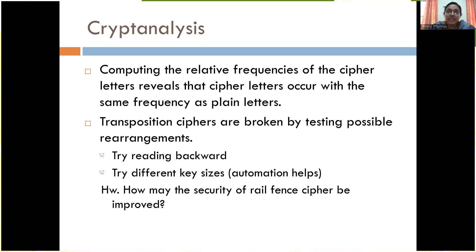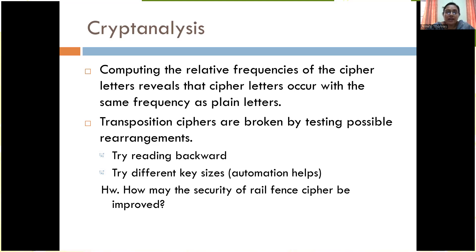For cryptanalysis, computing the relative frequency of the cipher letters reveals that cipher letters occur with the same frequency as plain text, because the alphabets are not being changed — only rearranged. So frequency analysis alone cannot identify the cipher. Since transposition means rearrangement, we try different rearrangements: first reading backward, then trying different key sizes and automating key size management to check whether transposition cipher has been used.